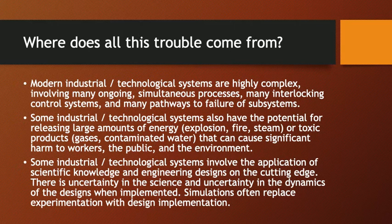Third, industrial and technological systems of today involve the application of scientific knowledge and engineering science at the very cutting edge. Therefore, there is a good deal of uncertainty in both the science and the workings of the designs and the artifacts and the physical systems as designed and implemented. Simulation is often used as a tool for trying to work out the dynamic properties of the system, but simulations have their own limitations — particularly in assessing the hazards and risks of a nuclear power plant.